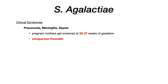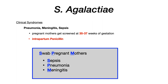The way to remember this: you are going to swab pregnant mothers — SPM — for neonatal sepsis, pneumonia, and meningitis. Remember 35 to 37 weeks, and treatment equals intrapartum penicillin if positive. This should make sense practically because this pathogen colonizes the vagina. If you don't screen and treat mothers, when the baby is delivered through the canal and rubs up against an area with strep agalactiae, it can cause pneumonia, meningitis, and sepsis. That's why we screen and treat at 35 to 37 weeks with intrapartum penicillin.